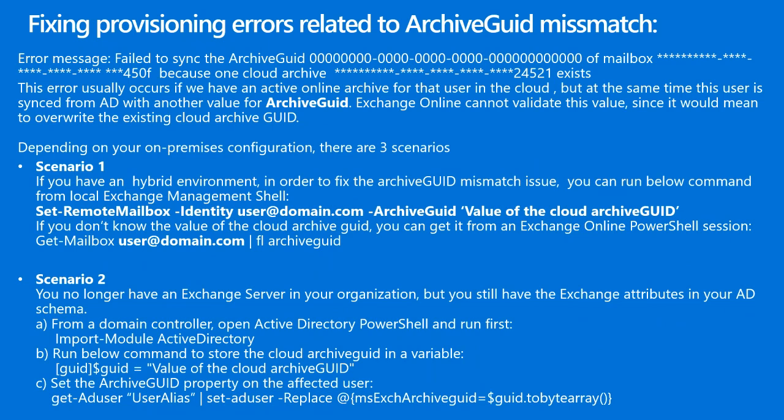Scenario 2 applies when you no longer have an on-premises Exchange server but still have Exchange attributes in your Active Directory schema. From a domain controller, open Active Directory PowerShell and run Import-Module ActiveDirectory. Then store the cloud archive GUID in a variable and set the archive GUID property using the command Set-ADUser with the -Replace switch.